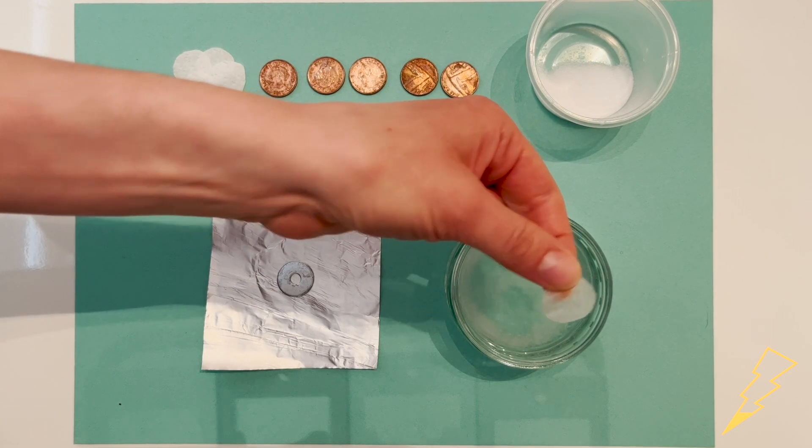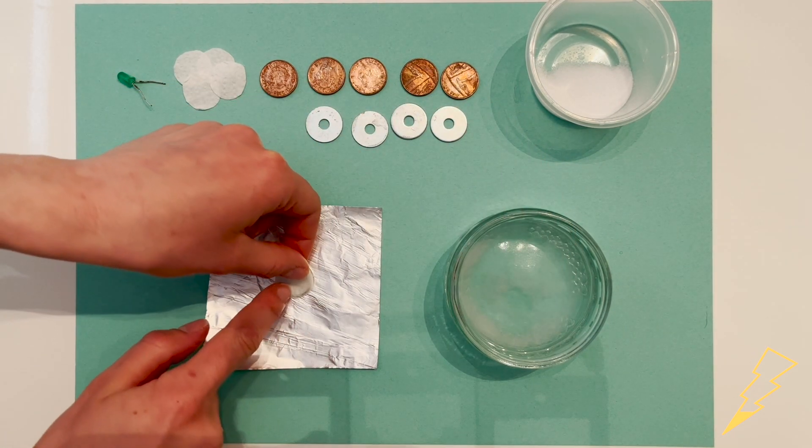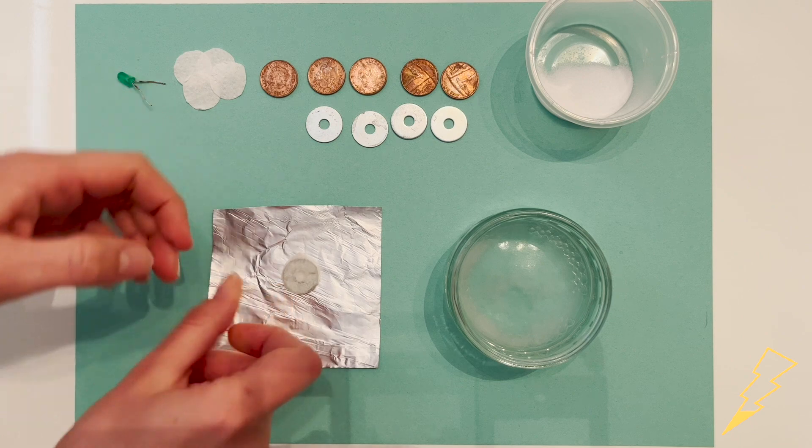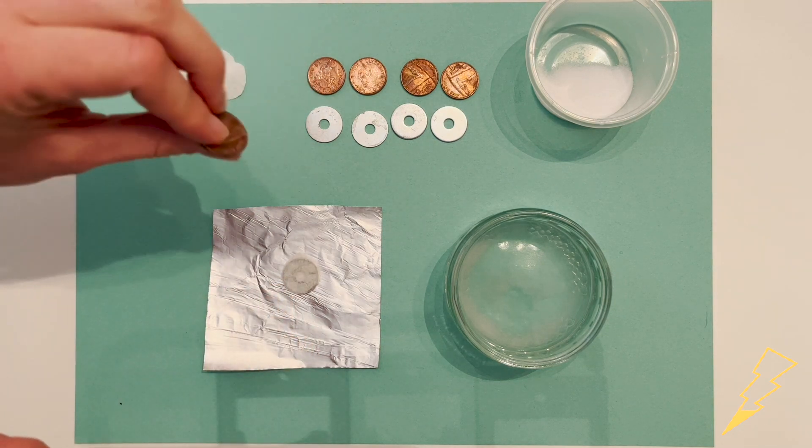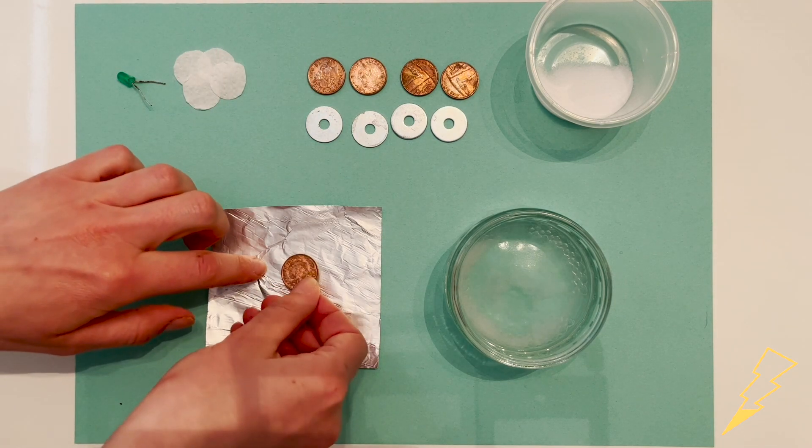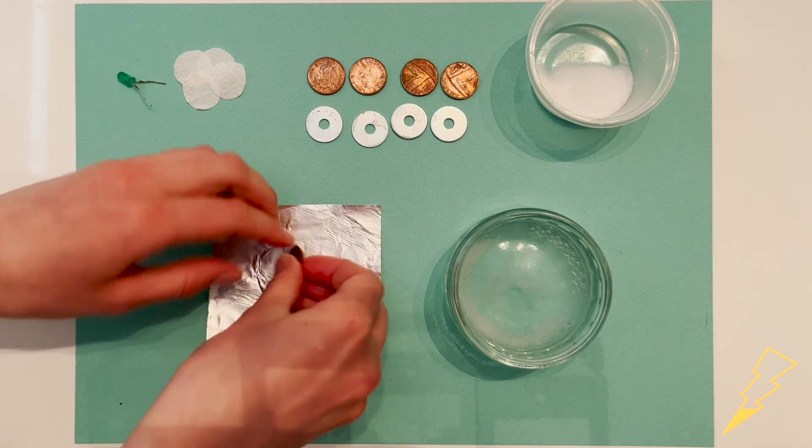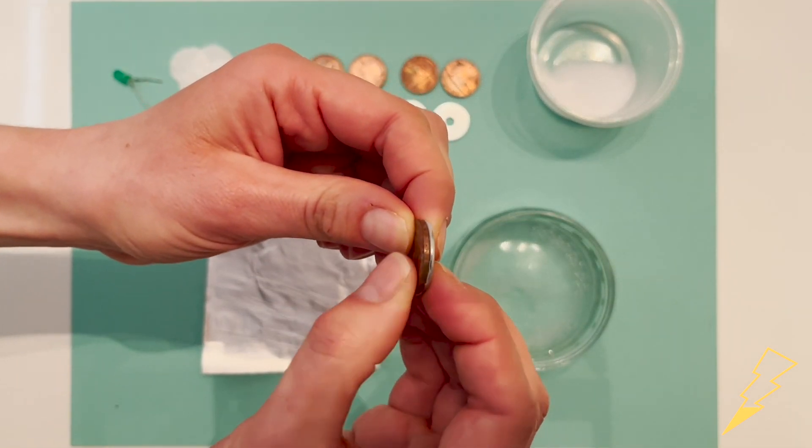...and then carefully place it on top of the zinc washer. Then I'm going to get one of the copper coins and place it on top of the paper circle, and that's our first cell complete.